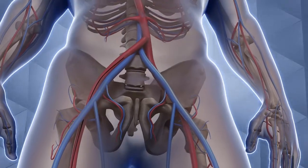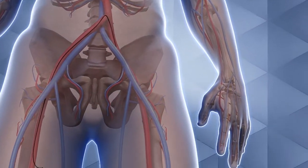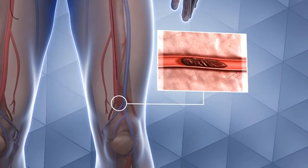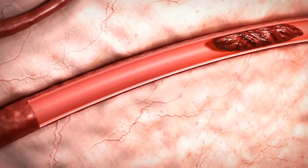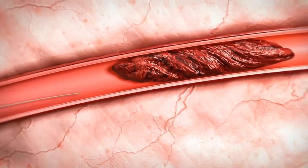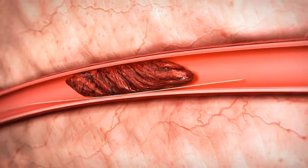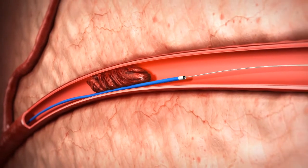The device is inserted by a standard peripheral percutaneous seven French guide sheath. The physician places a hydrophilic wire through the organized thrombus. A small catheter is advanced over the guide wire through the debris.